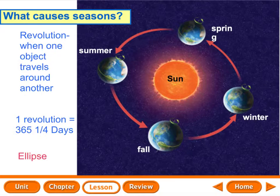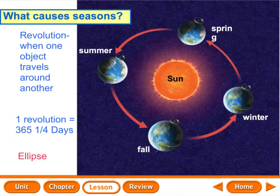One revolution takes about 365 and one-fourth days — that's one year. We learned that 24 hours is one rotation, one day and night. One revolution takes 365 and one-fourth days. You can't do one-fourth of a day, so using some math, four one-fourths gets you one whole day. What happens every four years? Something called a leap year. Every February 29th, you make up that fourth day, and that's how our revolutions stay on track.